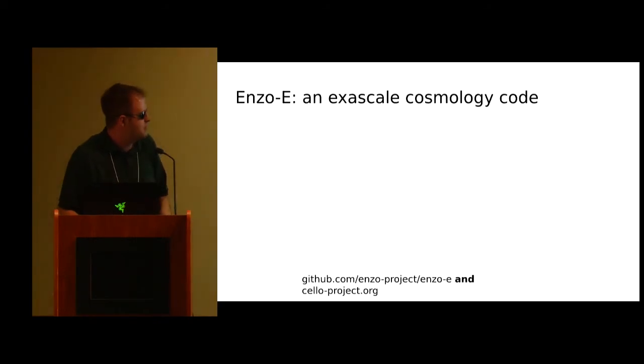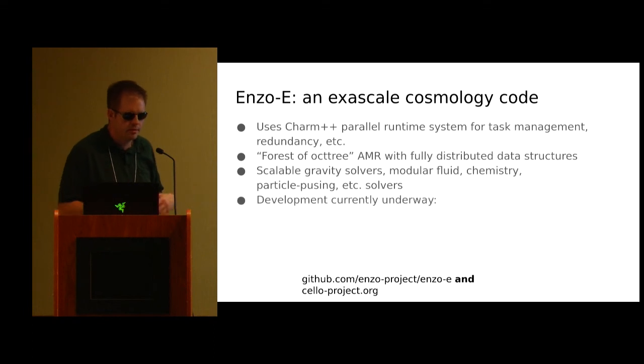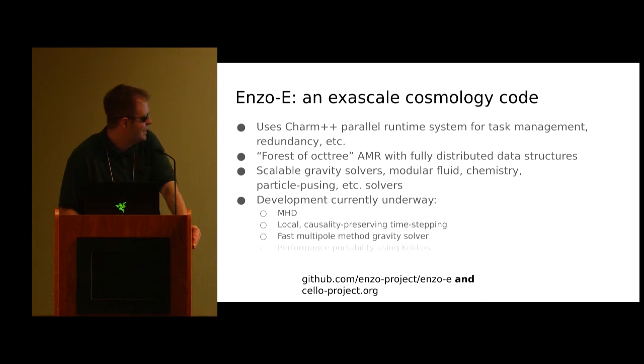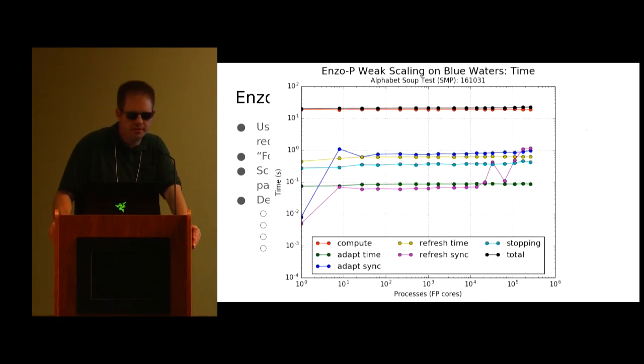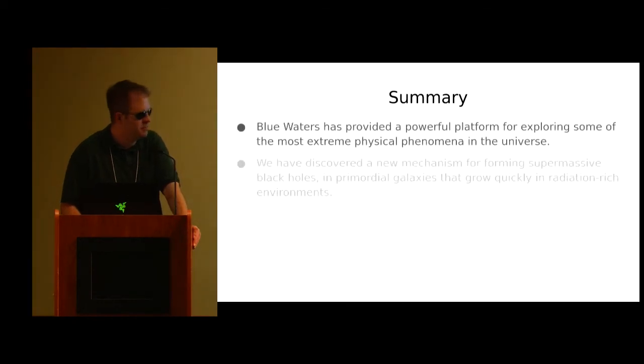So the second project is Enzo E, which we've heard about today, which is a Charm plus plus sort of rewrite of Enzo, which uses a forest of octrees instead of the patch based AMR from before. And it's also going very well. We're hoping to move into these sort of simulations in the future. All right, I'll leave the summary up.